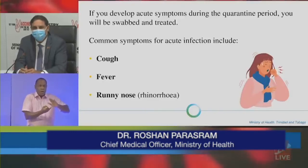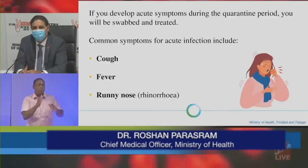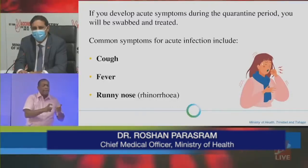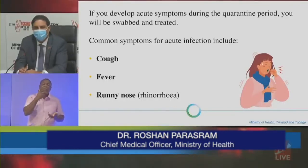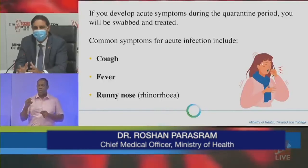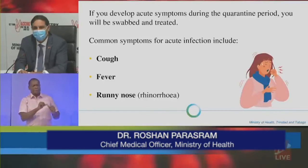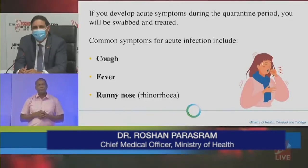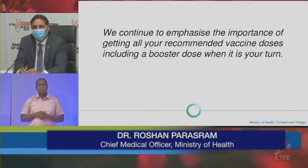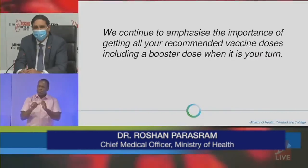If you developed acute symptoms during the quarantine period, you will be assessed and treated. The common symptoms for acute infection which we'll be looking at prior to discharge will be cough, fever, and runny nose — also called rhinorrhoea. Those are the three main ones, but there will be some discretionary level of the CMO, who if they think there's a hint of acute symptoms continuing, will make that decision when they look at that three-day period added on to the 10 days.